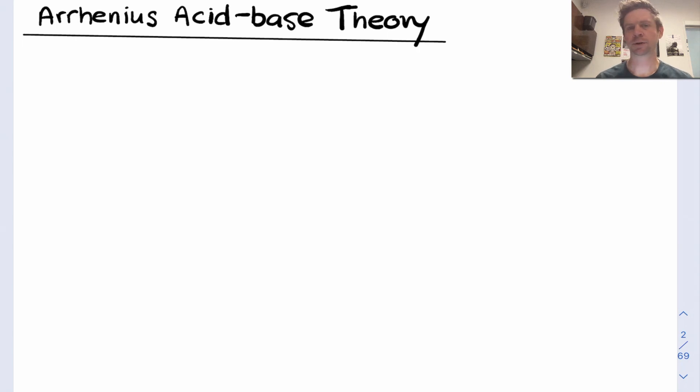The Arrhenius acid-base theory is one of the earliest theories of acid-base chemistry. Arrhenius' definitions of acid and base are primarily based on the effects of these compounds on aqueous solutions when they're dissolved in water.